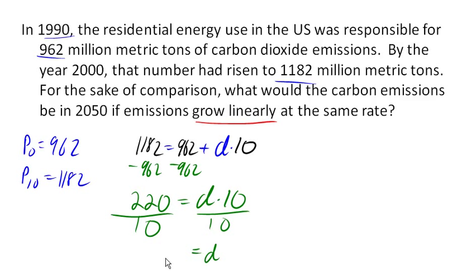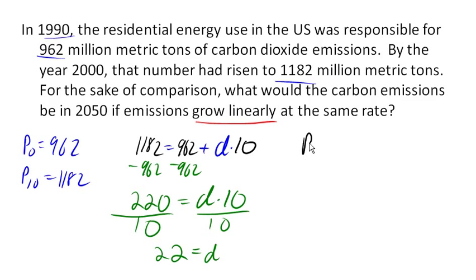That 220 is the total difference over those 10 years, and we're dividing by 10 years to get the average change per year. So we get an explicit linear equation of 962 plus 22N as the explicit linear model.